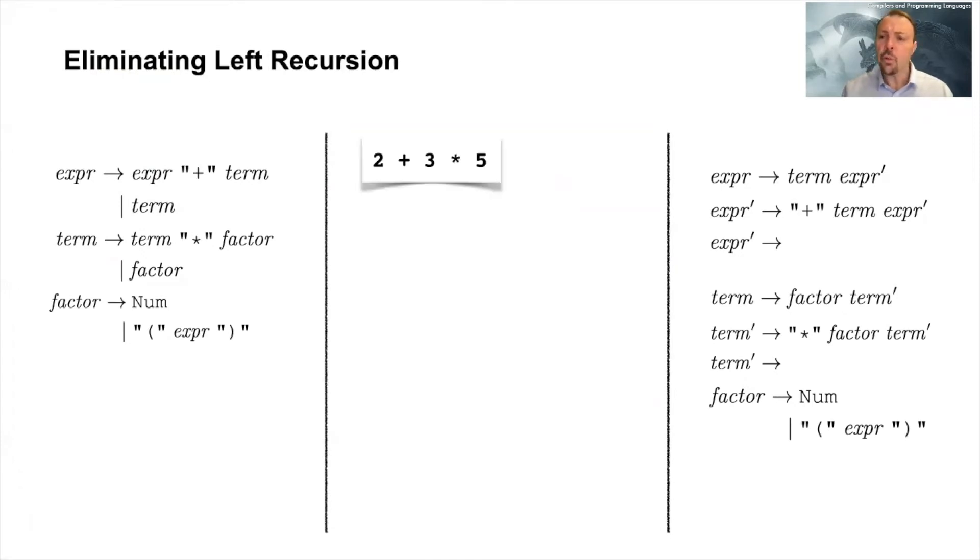So the only way to really convince yourself that this is correct is by looking at an example and making a derivation and see that it actually works out. We'll use this one, 2 plus 3 multiplied by 5, that we used in our previous video, and then we start with a non-terminal. So we have a start non-terminal expression, and the only possible replacement here is actually this first one.